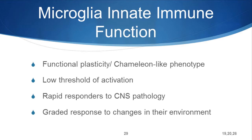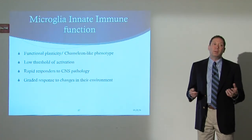Microglia have huge functional plasticity - these guys are chameleons. They can move from their ramified state and transform all the way into a macrophage. They have low thresholds of activation, so they move into action fairly quickly after any trauma occurs within the central nervous system. They rapidly respond to CNS pathology, and there is a graded response to their environment. The level of plasticity - what they're capable of sensing and responding to - is absolutely astonishing.